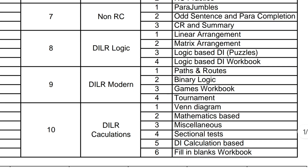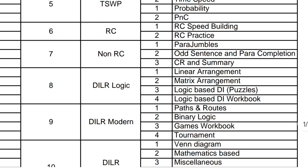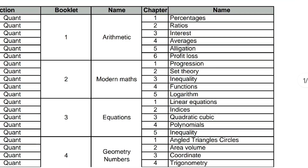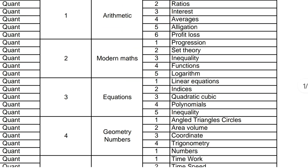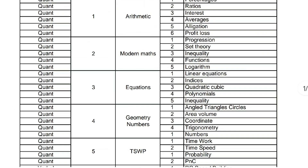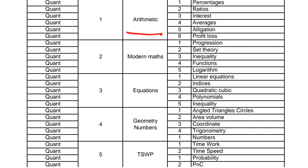Same way from the DI Logic point of view — once you have the average break up, you need to find out your performance across 3 areas: calculation-based DI, modern DI, and logic-based DI. For Quant, which is a bigger area, there are 5 parts: arithmetic, modern maths, equations, geometry, and numbers — plus time-speed-distance, time and work, and P&C. You have to identify how much you are scoring in each of these areas, then go and start working on that area.